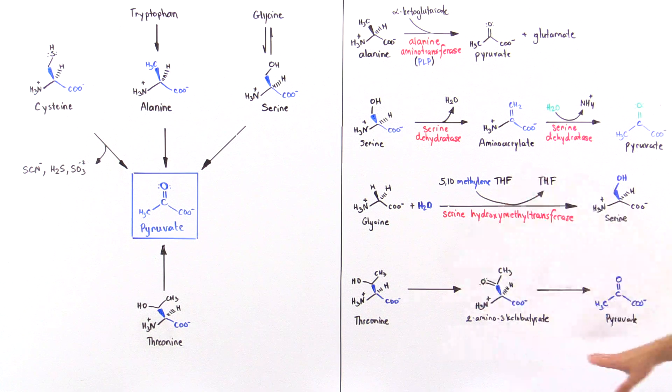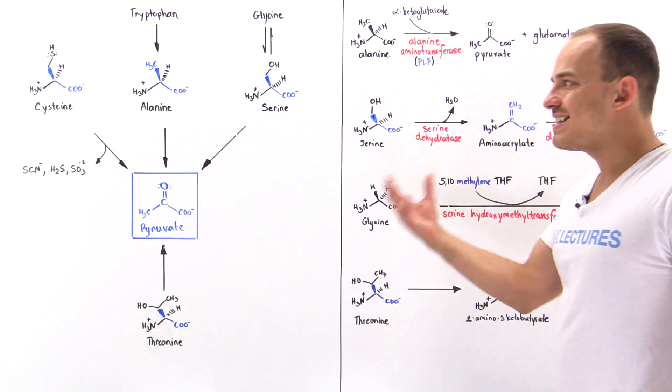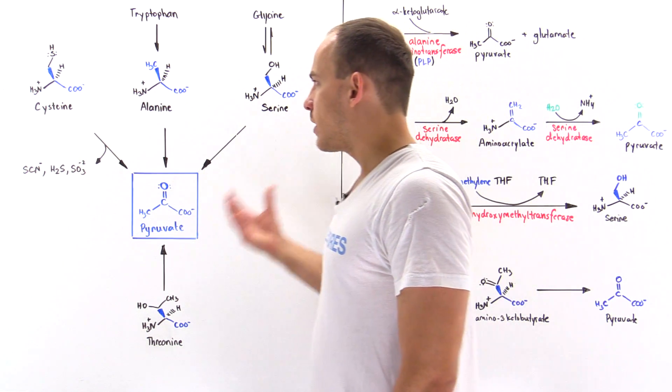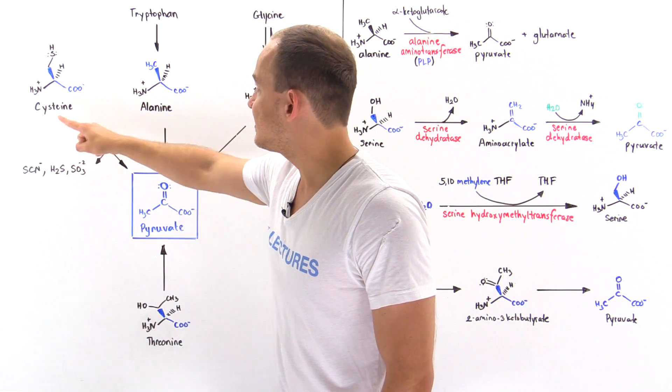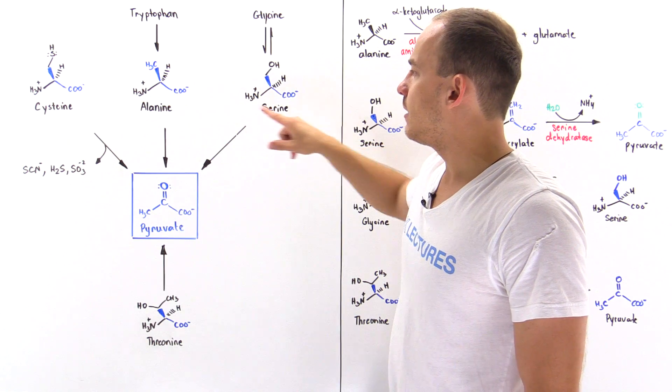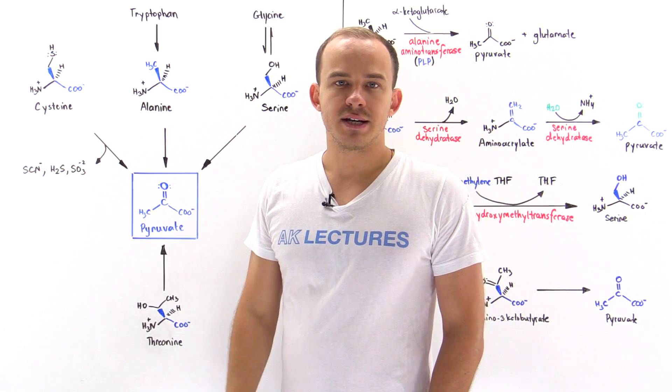So these are the six amino acids that can readily be transformed into pyruvate molecules. We have cysteine, tryptophan, glycine, alanine, serine, and threonine.